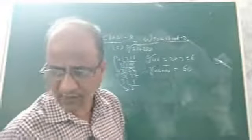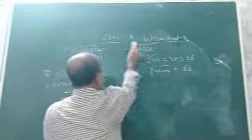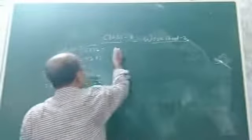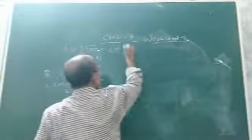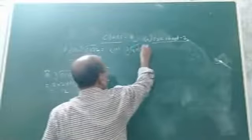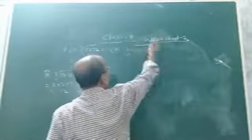Let us see the fourth one. Find the cube root of 21952.